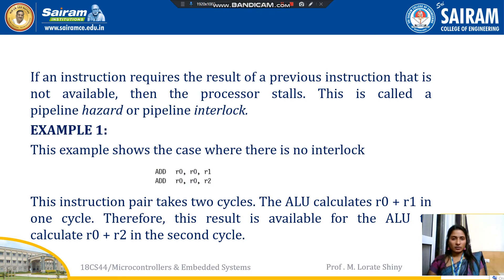Another important concept: in an ARM program, some instructions need the result of the previous instruction. If those previous results are not yet ready, the processor will stop executing the next instruction. This is called a pipeline hazard or pipeline interlock. Whenever an instruction requires a result from a previous instruction that is not yet available, the processor stalls — this process is known as pipeline hazard or pipeline interlock.